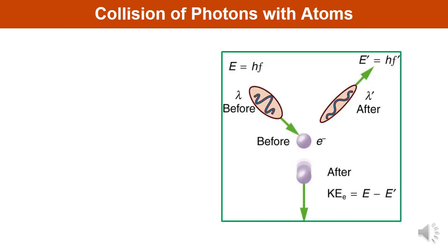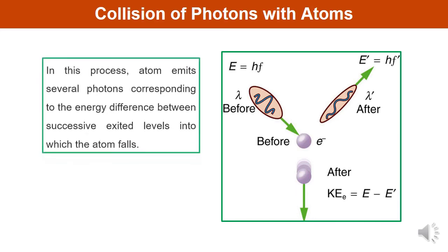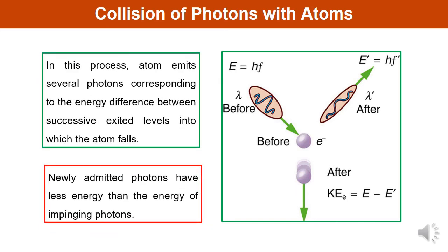In this diagram, the atom emits several photons corresponding to the energy difference between the successive excited levels into which the atom falls. The newly emitted photons have less energy than the energy of the impinging photon. Here you can see that the energy of the newly emitted photons is different from the energy of the original impinging photon.